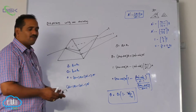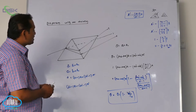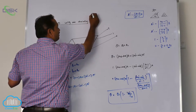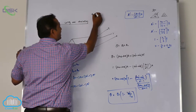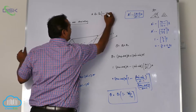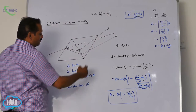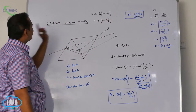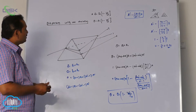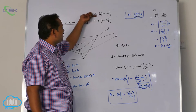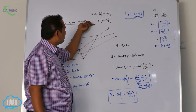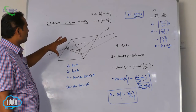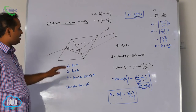Notice the logic for remembering these conditions. For deviation without dispersion: Delta equals delta one times (1 minus omega divided by omega dash). For dispersion without deviation: theta equals theta one times (1 minus omega dash divided by omega). The conditions are exactly reversed — omega and omega dash are swapped. These are the conditions for net deviation and net dispersion in the two complementary cases.